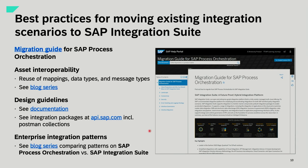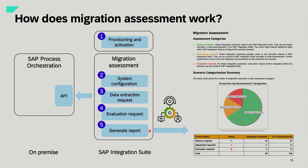Part of the migration offering includes documentation: migration guidelines and design guidelines to help you design enterprise-grade integration scenarios covering all Process Orchestration use cases, like scatter-gather patterns. The Migration Assessment allows you to connect to one or multiple SAP Process Orchestration systems, check the system configuration, extract integration configuration object data, evaluate it, and provide a report. The report uses a color coding: green scenarios can easily be migrated, yellow scenarios may need adjustment, and red means certain features are not yet available, indicating higher effort in the migration.